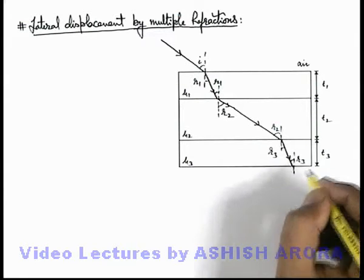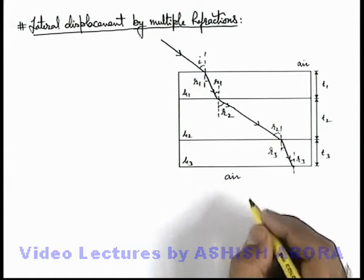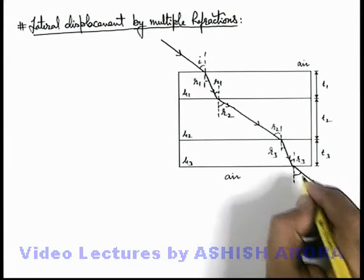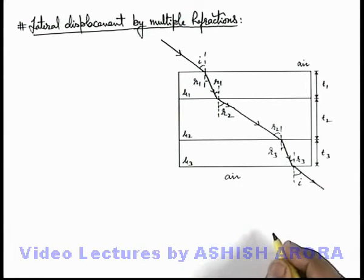This angle will also be r3, and finally as light is coming out in air, by Snell's law we can see that it'll finally come out at an angle of emergence i only.